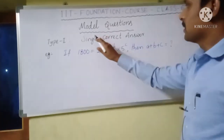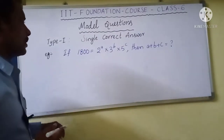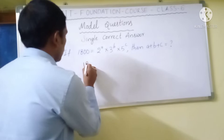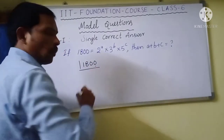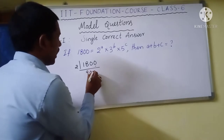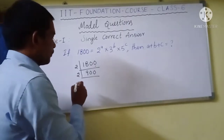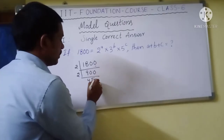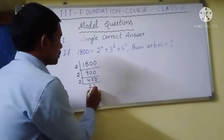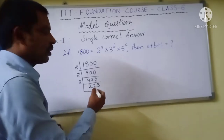Now we will discuss Single Correct Answer type questions. To solve this particular question, we should find the LCM of 1800. At the units place we have 2, so we divide by 2. Continuing to divide by 2 while the units digit allows, we find units place becomes 5, so we can no longer divide by 2. We proceed further with 3 or 5.